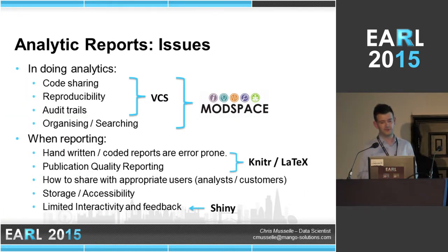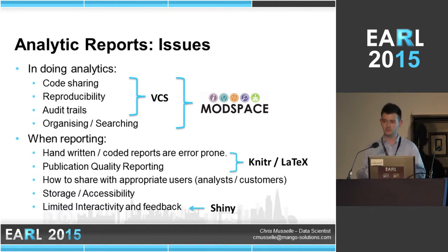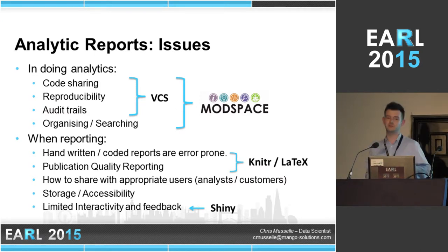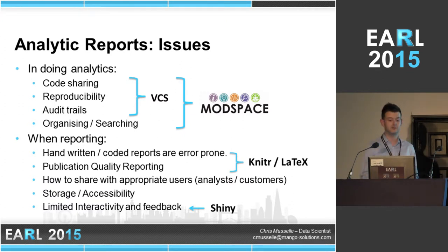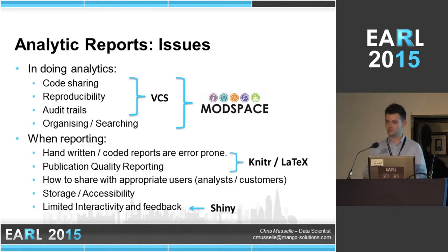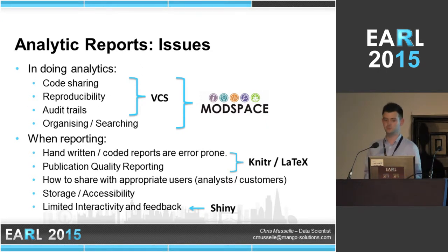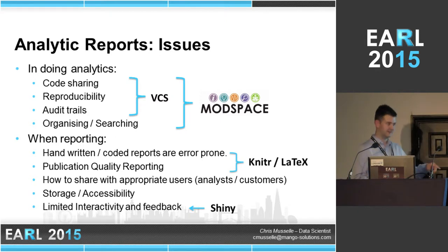In generating these reports, there are two sides where you'll commonly run into problems. On the analytics side, you've got to worry about sharing code, making sure it's reproducible when someone else runs it, having an audit trail of who made a change and why. And if you've got a lot of projects on the go, you want to find relevant projects quickly when your boss asks last minute — and you need to be confident you're sending the right version.